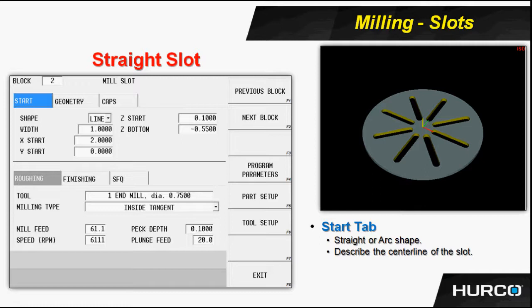Notice that at the top of this block we have some tabs: the start tab, geometry tab, and caps tab. We've just entered the information for the start tab. Each one of these tabs is important to the slot.